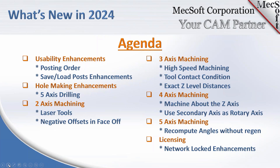We'll start with usability enhancements, then talk about posting order changes and save/load post enhancements. Then we'll go into hole-making enhancements — specifically a new five-axis drilling method. We'll also cover changes in two-axis machining: laser tools have been added for laser machining operations, negative offsets, and a minor face-off enhancement. Then three-axis high-speed machining, which is a really nice enhancement to the facing toolpath. This high-speed machining enhancement also carries down to two-axis machining, making it great for people machining hard materials.